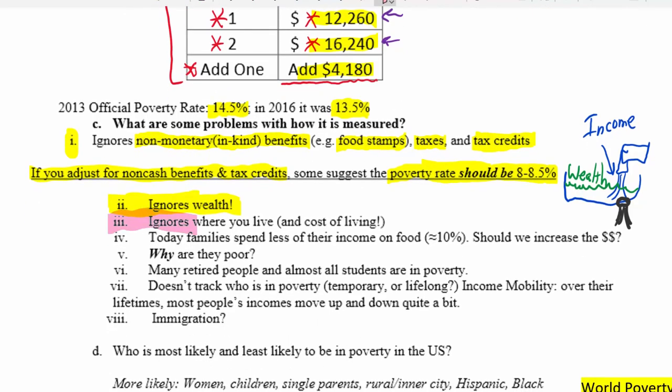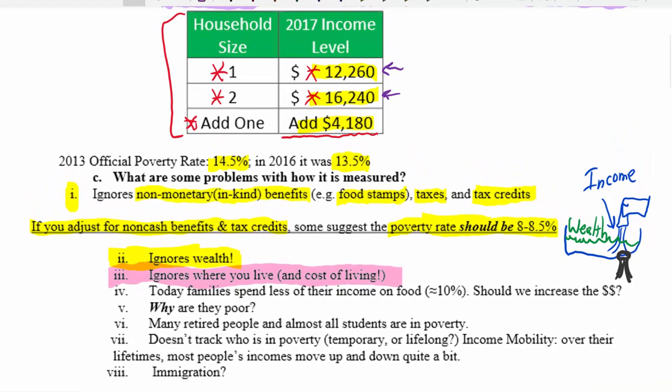Another thing is that these income limits ignore where you live. We do have a separate table for Alaska and Hawaii, but this totally ignores the fact that living in New York City costs at least twice as much as almost anywhere else in the United States, except perhaps San Francisco and parts of California. If we ignore the fact that money can buy much more in some places than others, that's a problem.